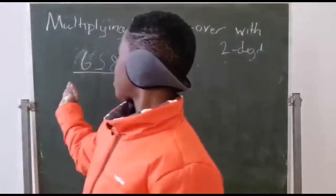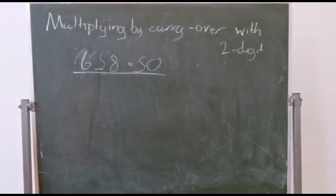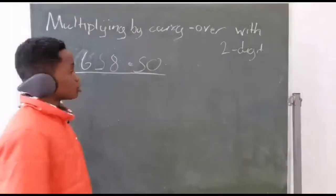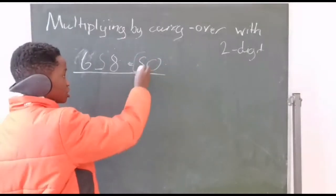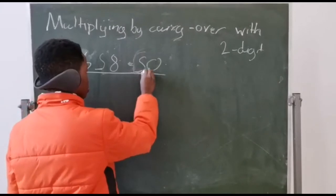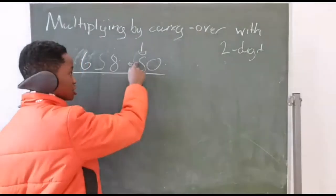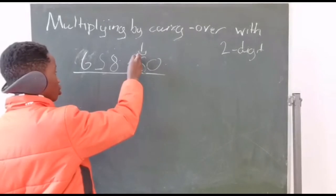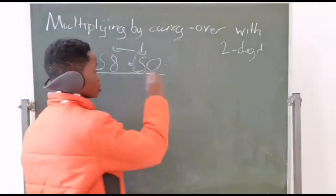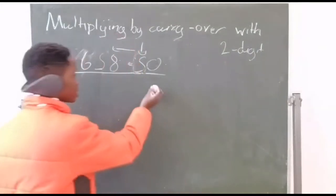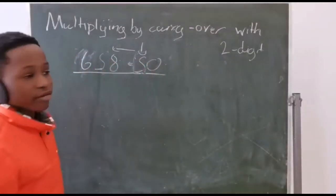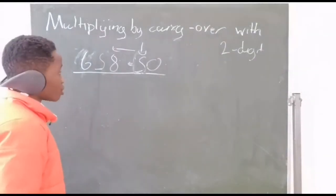I have here a math problem, so let's calculate. First of all, we are taking only this number and calculating it with all of these numbers. Then we are doing the same, writing the answer here, then doing the same with the zero and calculating everything again.